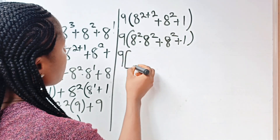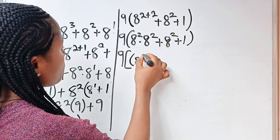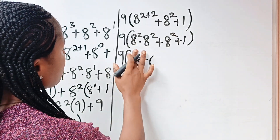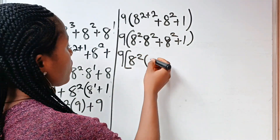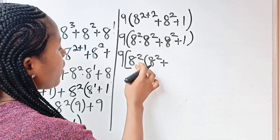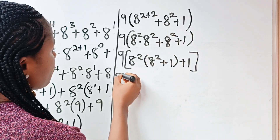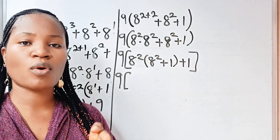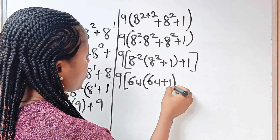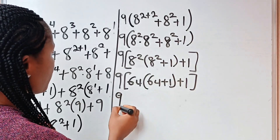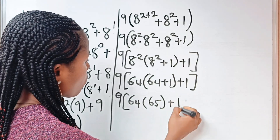Now we can factorize 8 to the power of 2 from here. So we bring out 8 to the power of 2 bracket. When this is divided by 8 to the power of 2, we have 8 to the power of 2 remaining; plus, when this is divided by itself, we have 1; then plus 1 again. Now, remember that 8 to the power of 2 is equal to 64. So we have 64 brackets: 64 plus 1, plus 1. So we have 9 times 64 multiplied by 65, plus 1.